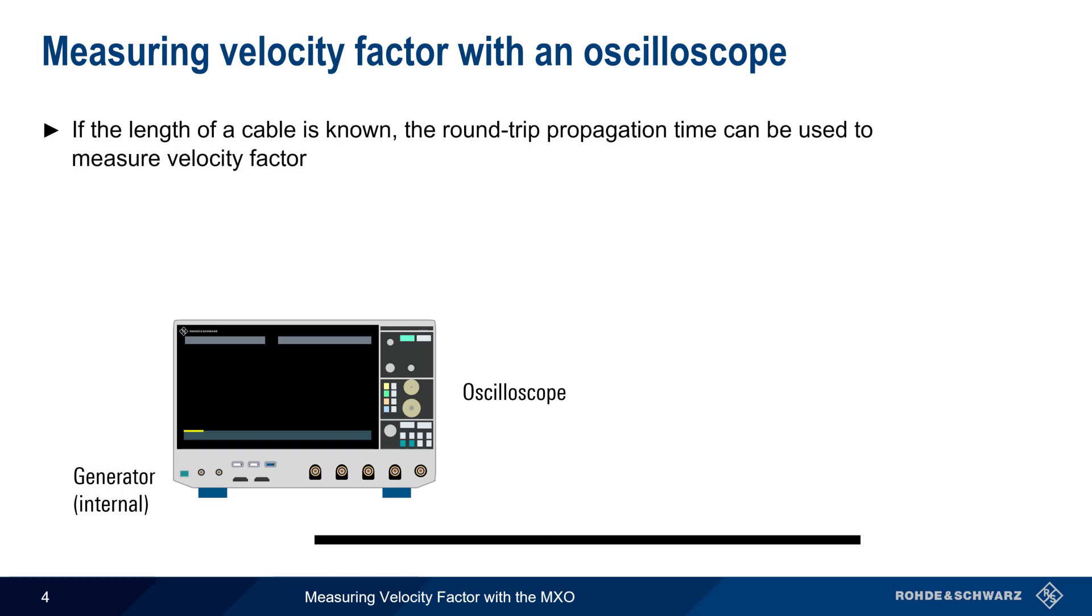If we know or measure the physical length of a cable, we can determine its velocity factor by measuring the time it takes for a signal to propagate down that cable and then back.